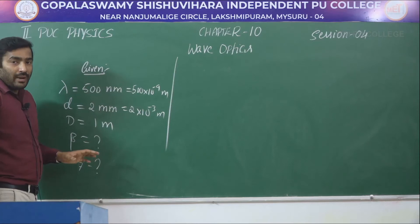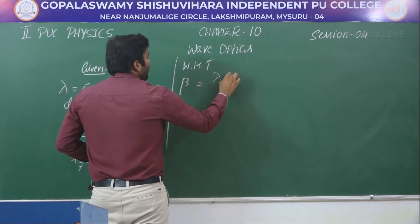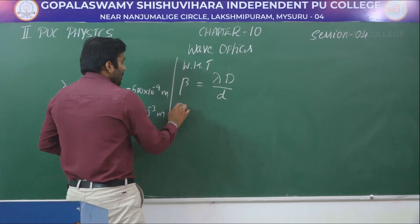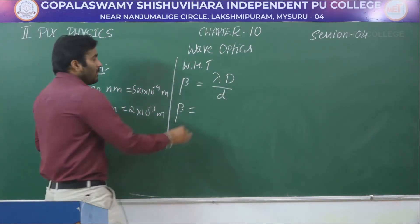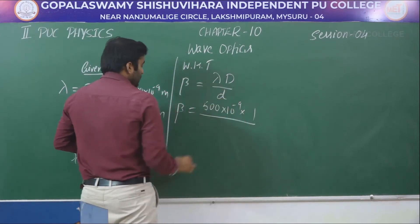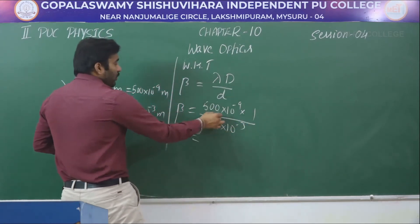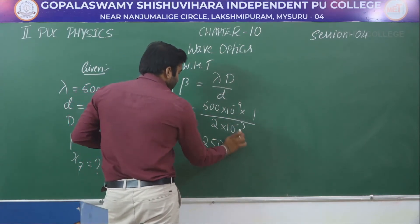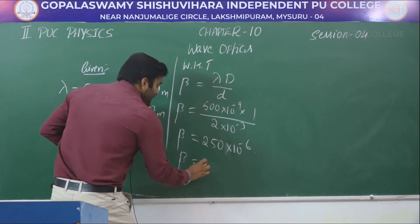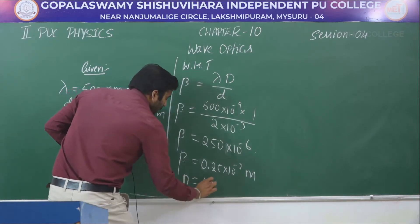The previous problem asked for a bright fringe; now they are asking for a dark fringe. Fringe width beta = lambda D / d = (500 × 10⁻⁹ × 1) / (2 × 10⁻³) = 250 × 10⁻⁶ meter = 0.25 millimeter. So the fringe width is 0.25 millimeter.